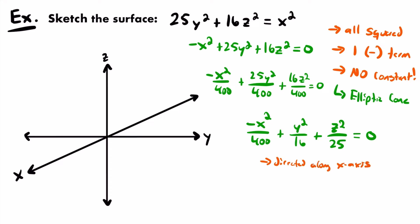Since it's directed along the x-axis, we want to find traces in planes along the x-axis to help us sketch it. We set x equal to some nice values that will give us ellipse equations. The traces parallel to the yz-plane will be ellipses when the elliptic cone is directed along the x-axis. Two nice values to plug in are x = 20 and x = -20, since 20² = 400, making that term equal to -1.